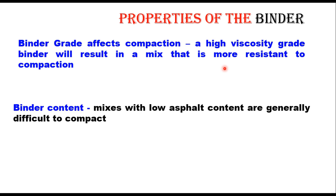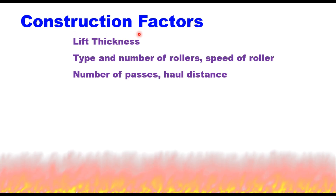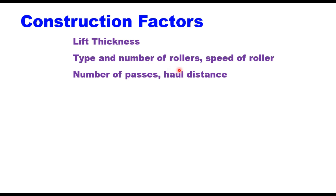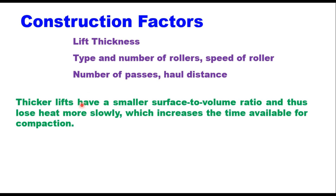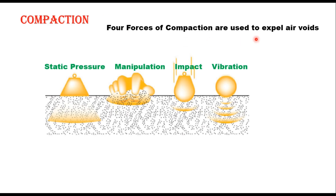The third parameter is construction factors and compaction equipment. Lift thickness, type and number of rollers, speed of roller, number of passes, and haul distance are important factors affecting compaction at site. Thicker layers have a smaller surface-to-volume ratio and lose heat more slowly, increasing time available for compaction. Four forces of compaction are used to expel air voids: static pressure, manipulation, impact, and vibration. Static load and manipulation involve lower forces. Static load is created by a steel drum roller in static mode or by a pneumatic roller. Impact and vibration are dynamic forces generating higher compaction force, developed by vibratory rollers.